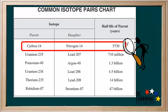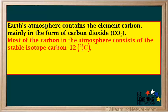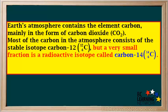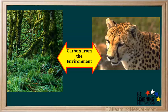Let's take a closer look at the carbon-14 dating system. Earth's atmosphere contains the element carbon, mainly in the form of carbon dioxide, CO2. Most of the carbon in the atmosphere consists of the stable isotope carbon-12, but a very small fraction is a radioactive isotope called carbon-14. The ratio of carbon-14 to carbon-12 in the atmosphere has been relatively constant for the last 50,000 years. While they're alive, plants and animals are constantly ingesting carbon from the environment, from carbon dioxide or food.